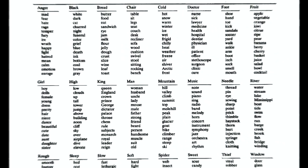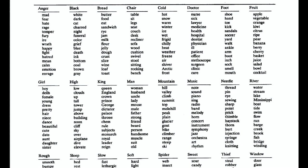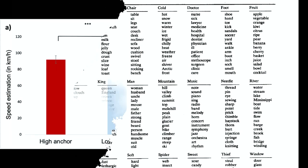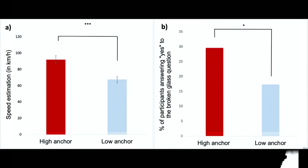In the DRM study, we can see how people can falsely recognize a word based on similar words. For example, participants see words like 'hospital' and other related words, but never see the word 'doctor' — yet they can say with high confidence that they did see the word 'doctor.'